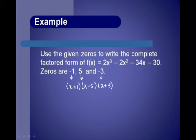If we tried to multiply it out, our first terms would give x to the third, but the original function has 2x to the third. The previous theorem said we need to multiply our factors by a sub n so that our polynomial matches the original function. So this would be our factored form with the 2 out front.